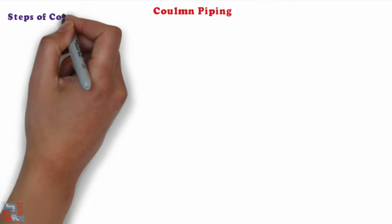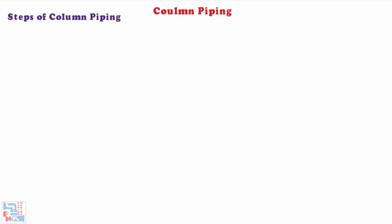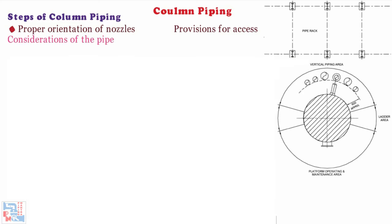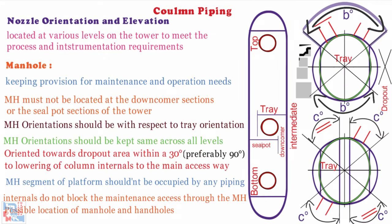Now, let's consider the steps of column piping study. As we have learnt by now, the designer now starts thinking about the proper orientations of nozzles and provisions for access to the points of operation and maintenance as per previous slide. Considerations of the pipeline leaving the tower area and the adjacent piping shall be visualized. The first step is to orient the manholes preferably all in same direction. You should be remembered all those points that we have discussed.